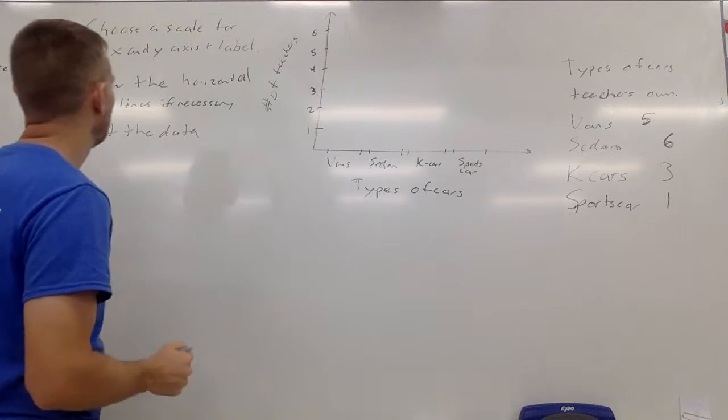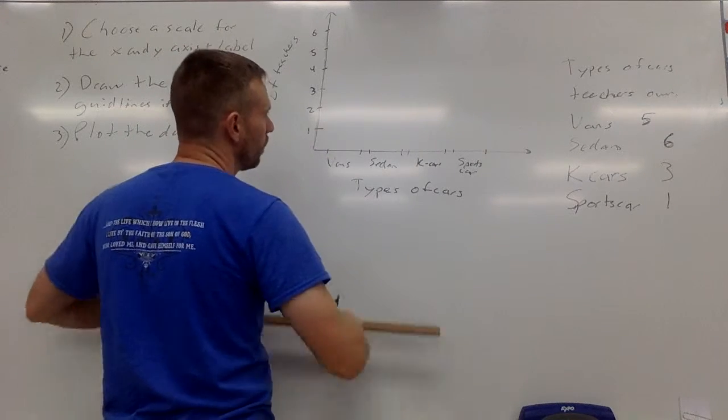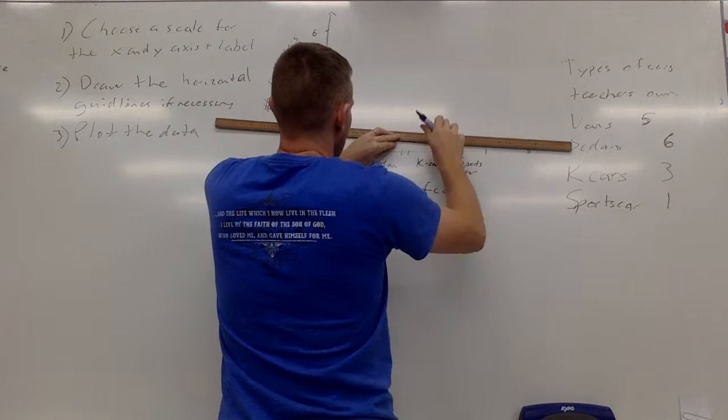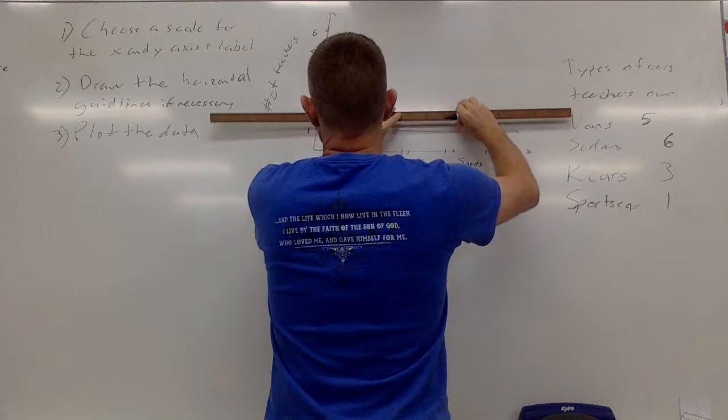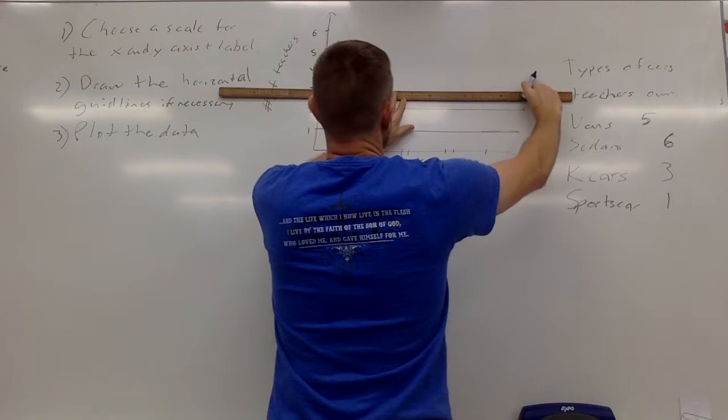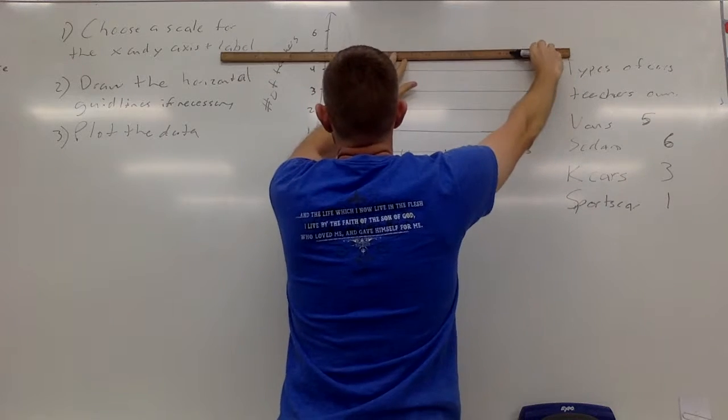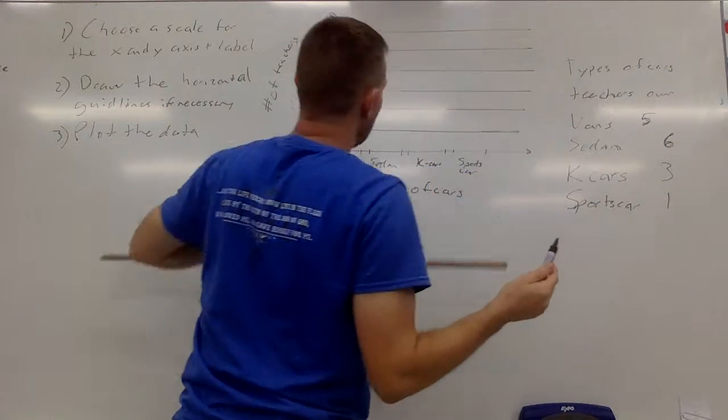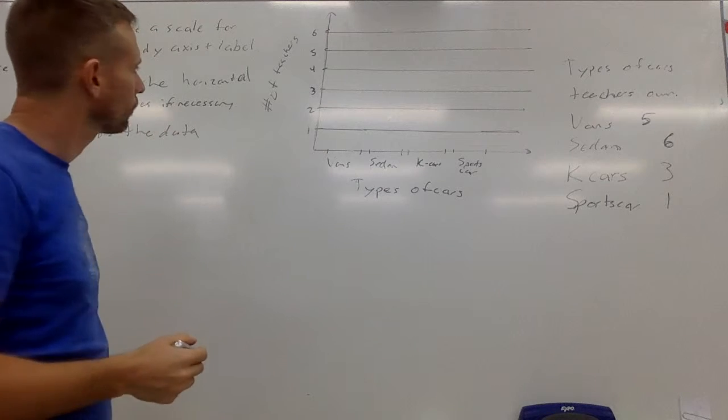So that's the number of teachers that own these types of cars. Now I'm going to draw the horizontal lines. Since I'm not doing this on graph paper I'll use a ruler, but if you have graph paper you might not necessarily need to, although it could still be helpful for the person viewing your graph to see very easily how many there are in each category.